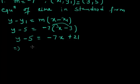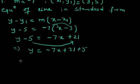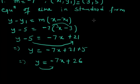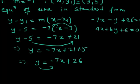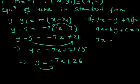Because I want the equation in standard form, I'll collect the constants together. So y equals minus 7x plus 21 plus 5, which gives y equals minus 7x plus 26. Bringing y to the other side: minus 7x minus y plus 26 equals 0. I prefer to make the leading coefficient positive, so I multiply the whole equation by minus 1. This gives 7x plus y minus 26 equals 0, which is the equation in standard form.